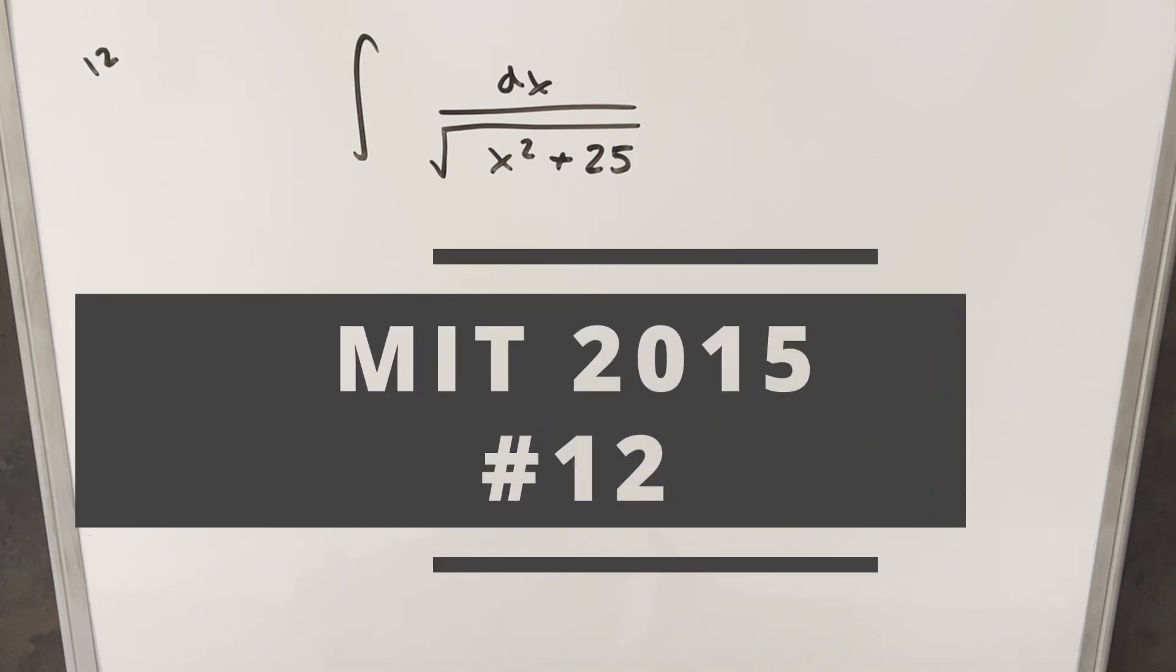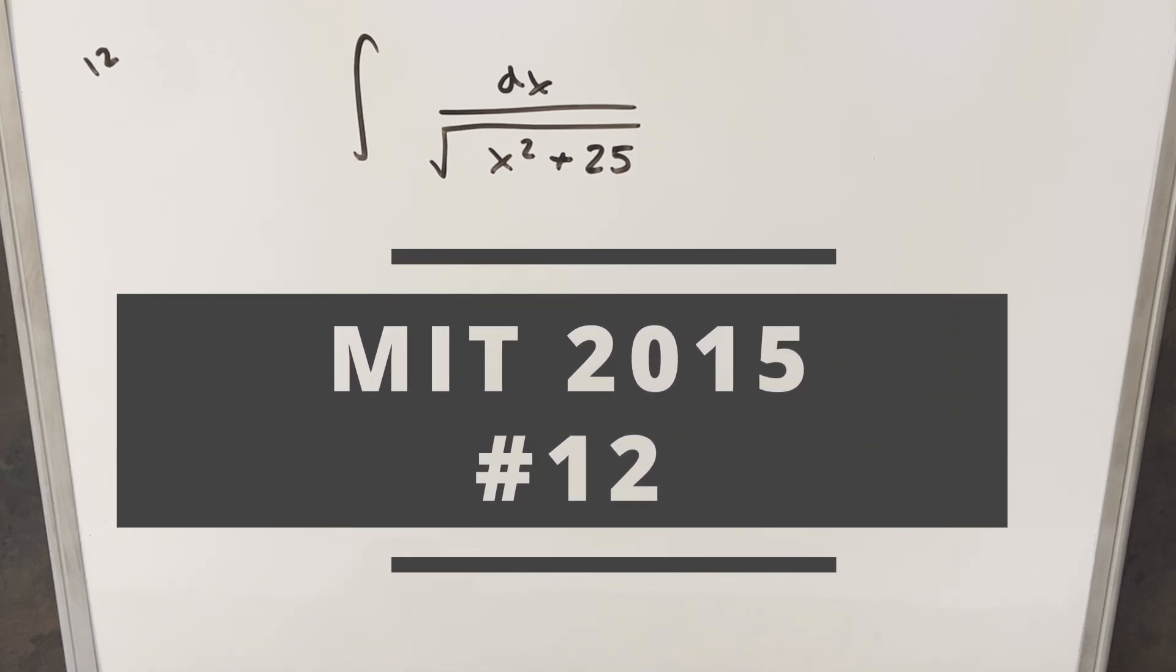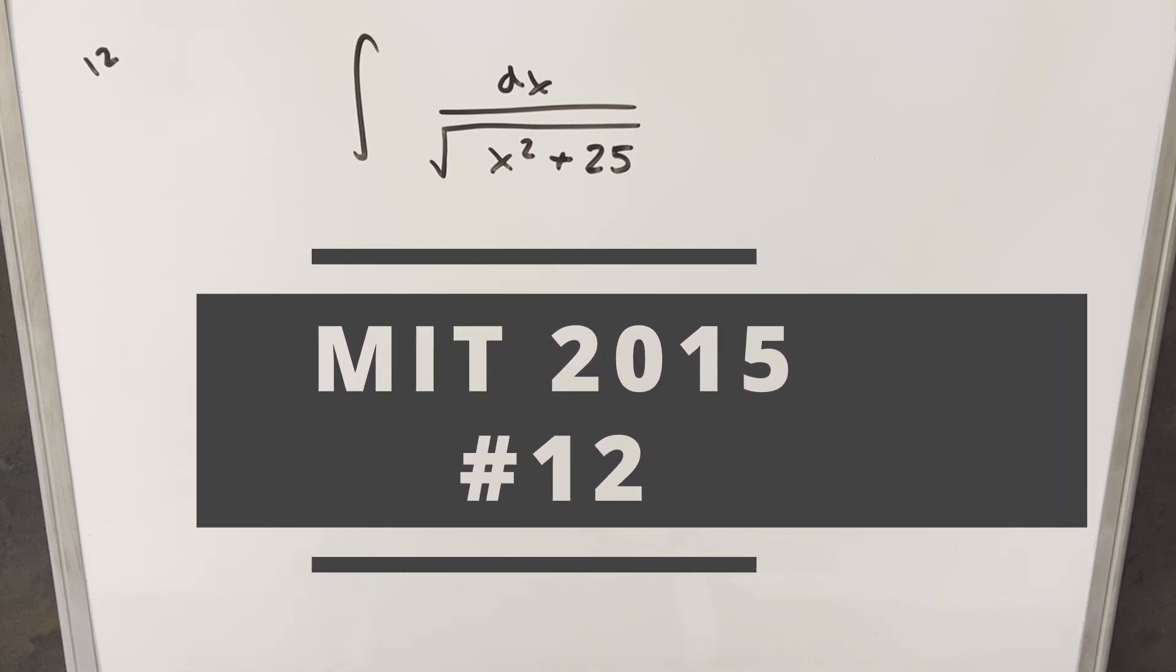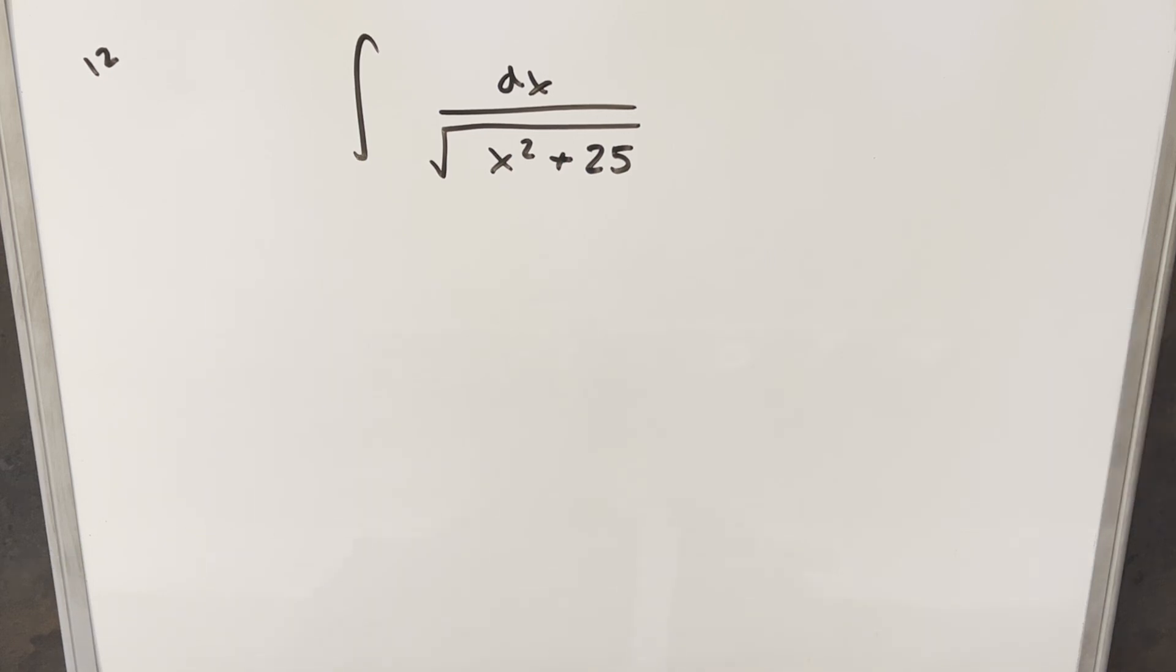Okay, we are here to take another integral from the MIT integration B 2015. This is number 12. You have an integral of 1 over square root of x squared plus 25 dx. I actually saved this problem for last just for this channel, because this is the only one I haven't done from MIT 2015.